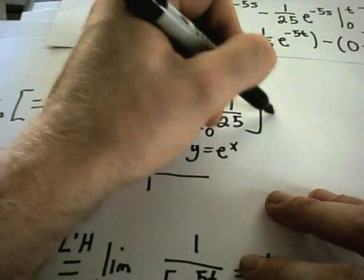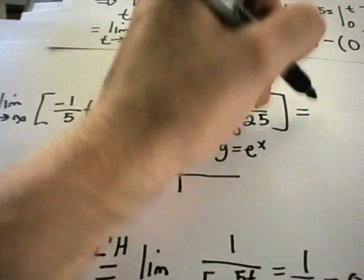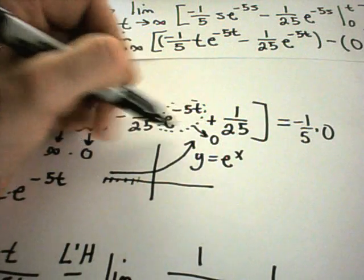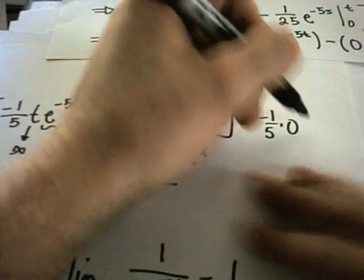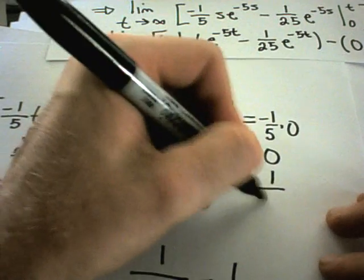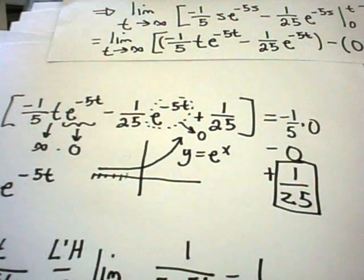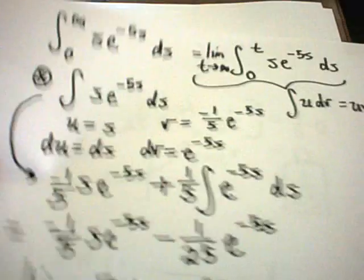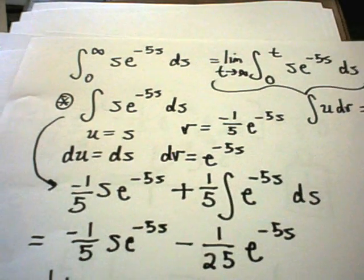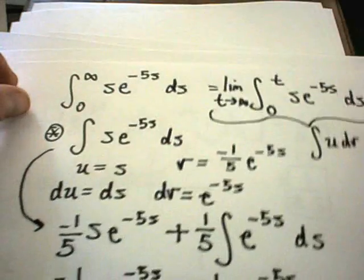Going back, we have −(1/5) times 0 — that whole first term goes to 0 — minus 0 for the second term, leaving us with just +(1/25). So our solution works out to be 1/25, and we say that the original integral is a convergent integral. A lot of work for one problem!